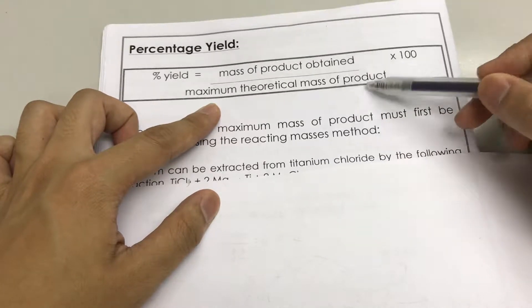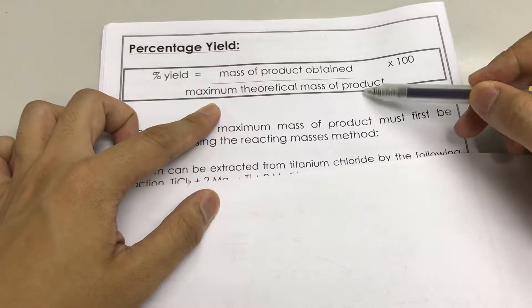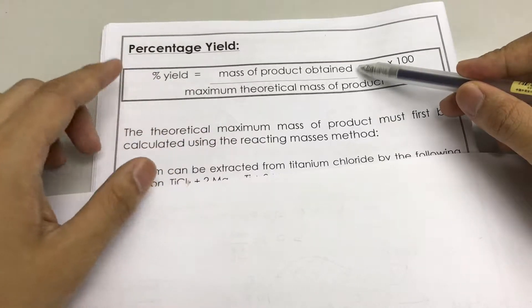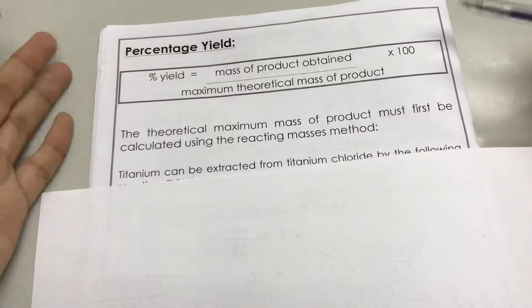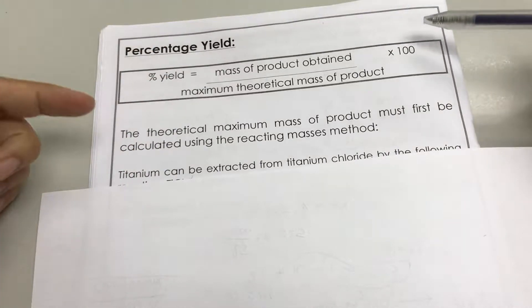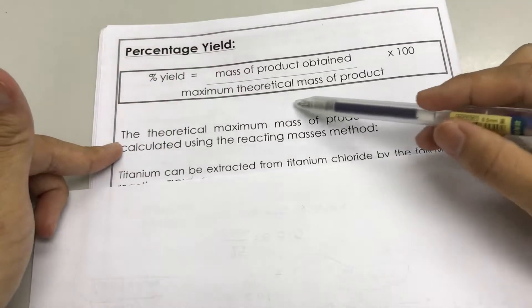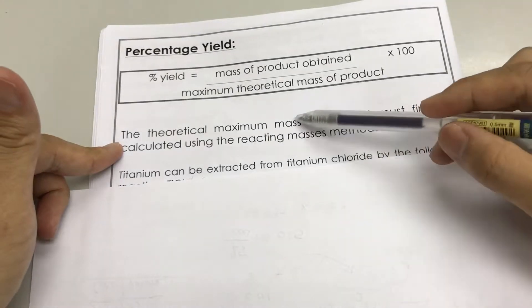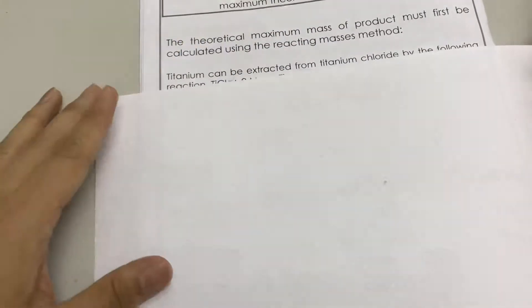The number on the bottom is always bigger than the number on top, unless you make a mistake when you measure the amount of product. We first always calculate the theoretical maximum mass.